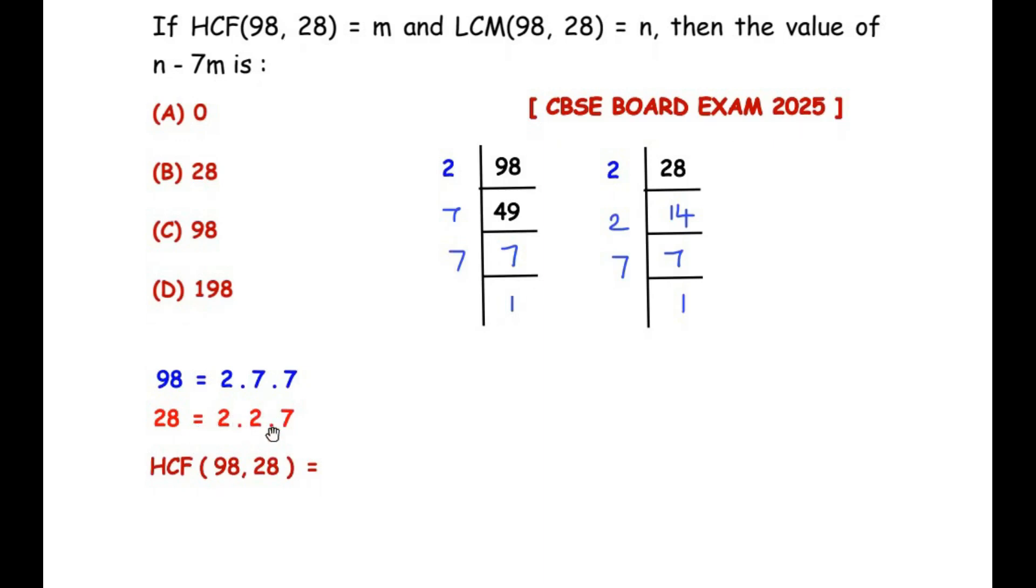Next, let's find the HCF. To find the HCF, we circle out the common factors from these two numbers. We can see 2 is a common factor and 7 is a common factor. So the HCF becomes 2 times 7 giving us 14, and since the HCF is given as m, the value of m is 14.